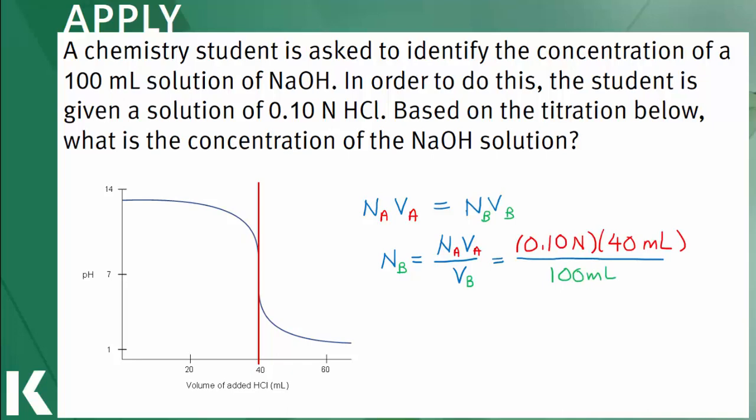The normality of hydrochloric acid is 0.1 normal, volume of acid added according to the graph is 40 mL, and the volume of sodium hydroxide is 100 mL. The normality of sodium hydroxide is 0.04 normal.